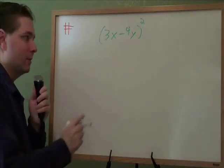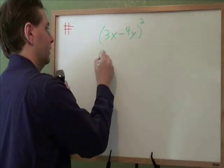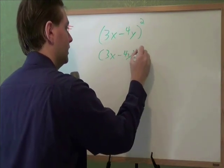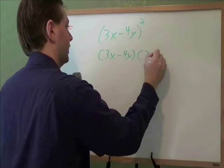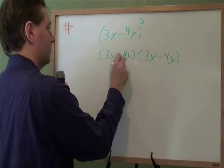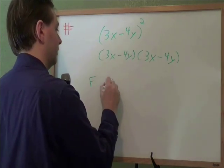To start this problem, you need to remember, what does squared mean? Square means times itself, so we need 3x minus 4y times itself, times another 3x minus 4y. And then when we have something like this times something like that, we need to use the FOIL process on it.